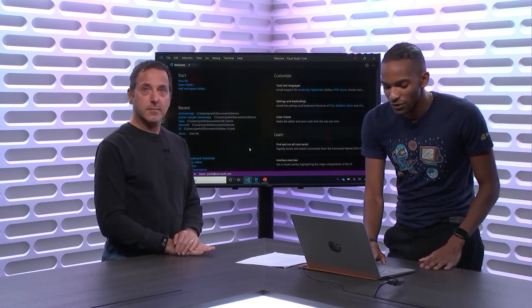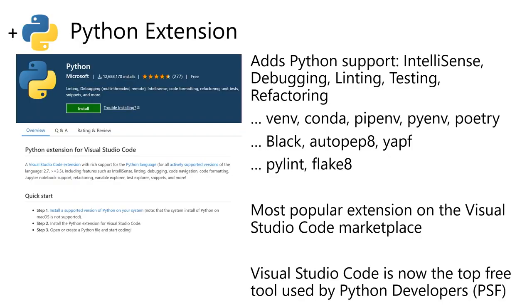The Python extension offers a lot of great jam-packed features. It offers IntelliSense, debugging, testing, support for virtual environment packages like venv and Conda, some formatters like Black and AutoPep8, as well as popular linters like PyLint. Some fun facts: it's the most popular extension in the VS Code marketplace.